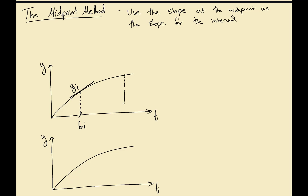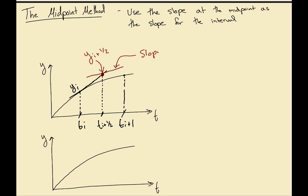We have a point at ti and another point forward at ti+1, so the midpoint would be at ti+1/2. What we're trying to do is predict the value at this midpoint. Once we have that midpoint value, we find the slope there — the slope at the midpoint yi+1/2 — which might look something like this, following the curve.